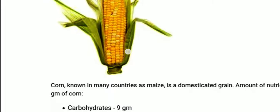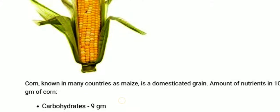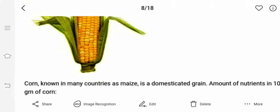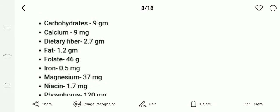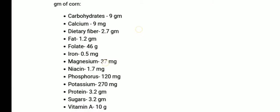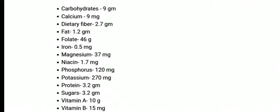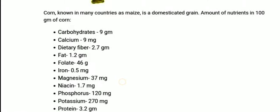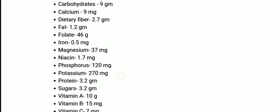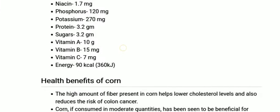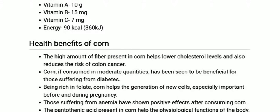Today's topic is processing of corn and corn products. Corn, known in many countries as maize, is a domesticated grain with a rich amount of nutrients. The table shows the nutrient composition per hundred grams of corn, including carbohydrates, calcium, dietary fiber, fat, folate, and iron. Now we can see the health benefits of corn.